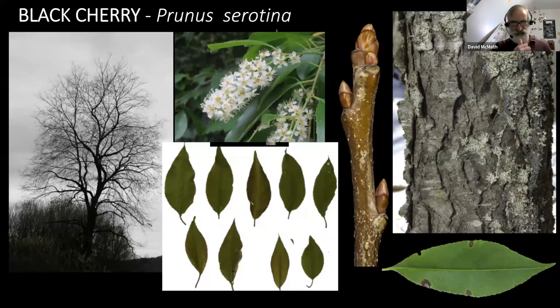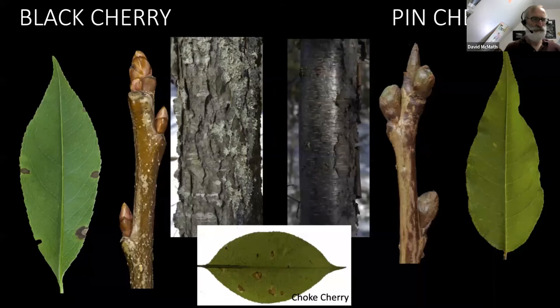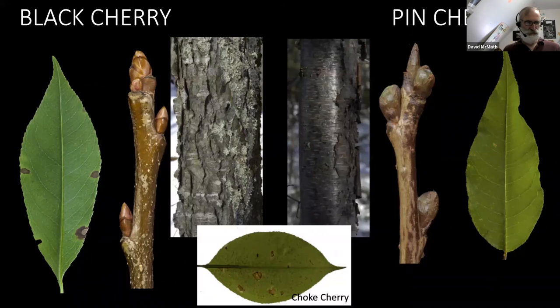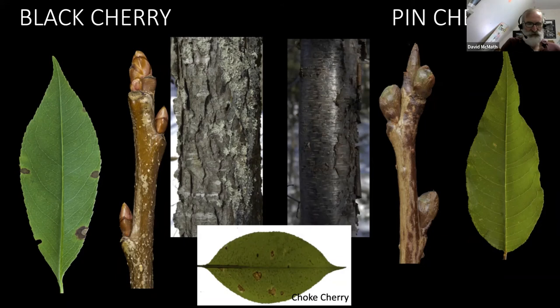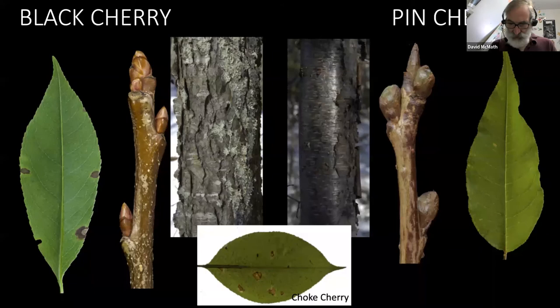On the comparison slide: the pin cherry on the right has the classic lancelet-shaped leaf, while black cherry is a thicker, less lanceolate-shaped leaf. You can see the difference in the bark. If you have a hand lens, you can look at the buds too. Choke cherry is often thrown in with the mix, but choke cherry is a shrub — it does have berries, but it's not really related.